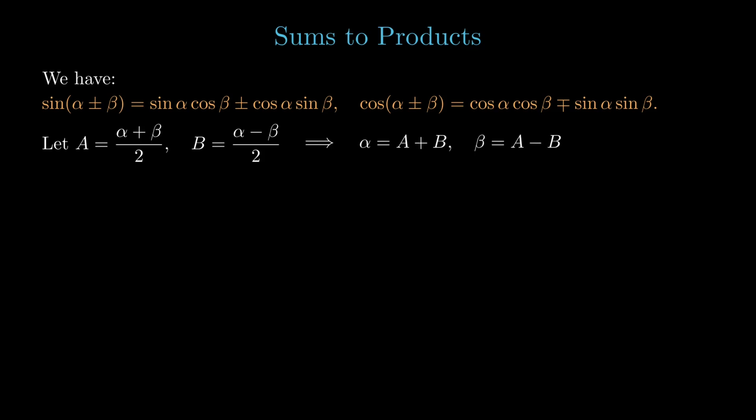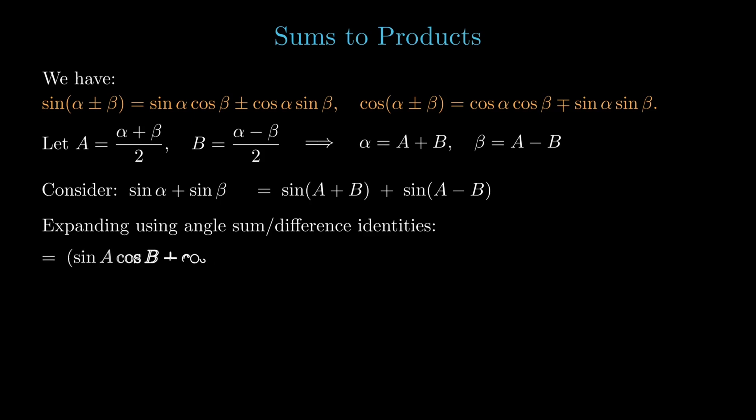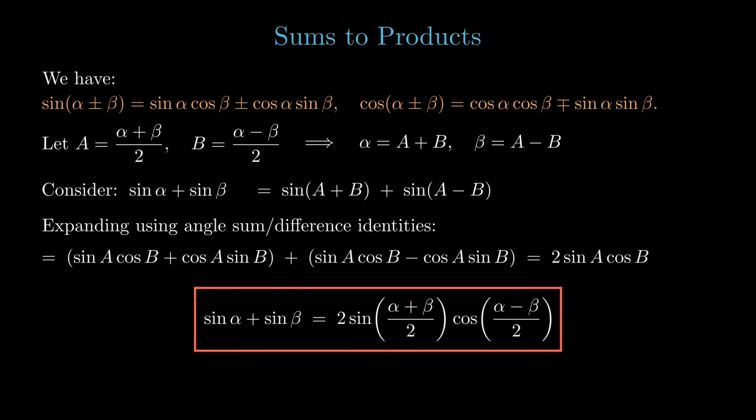One more toolkit you'll see everywhere, converting sums to products. It's cleaner than it sounds and again we'll do this systematically, not by memorizing of course but by substitution and simplification. So, we start with the sum and difference identities once again and let's take A as (α+β)/2 and B as (α-β)/2. That implies α equals A+B and β equals A-B. Now, consider sin α + sin β. You can rewrite this as sin(A+B) + sin(A-B). All that is left to do is to expand using the sum and difference identities and simplify which finally should give you 2 sin A cos B. And thus, putting in the values of A and B in terms of α and β, we get sin α + sin β equals 2 sin[(α+β)/2] times cos[(α-β)/2].